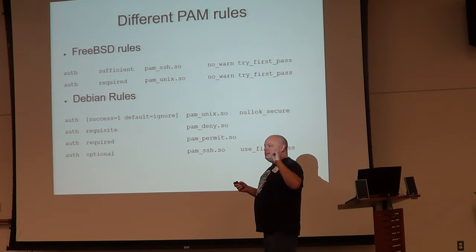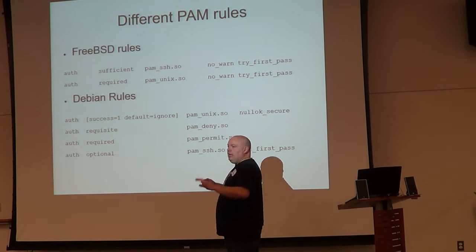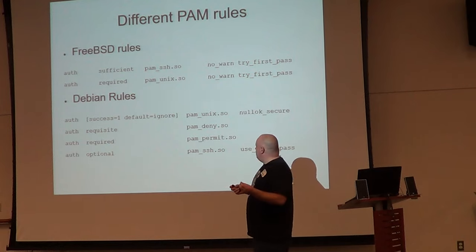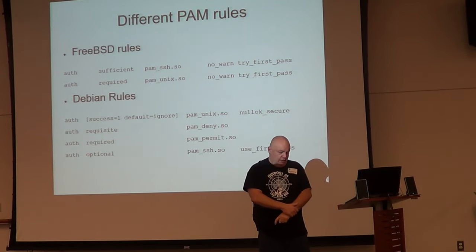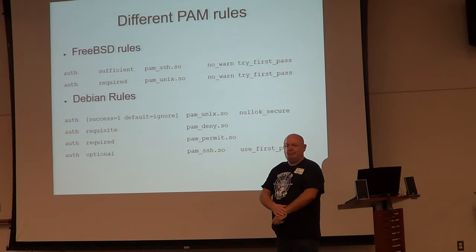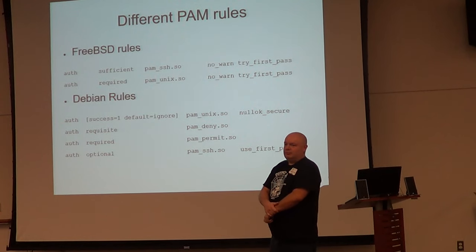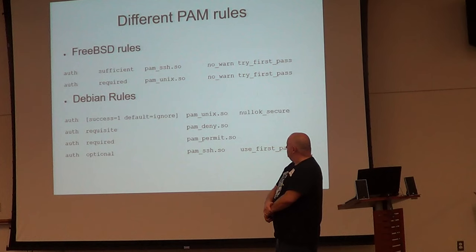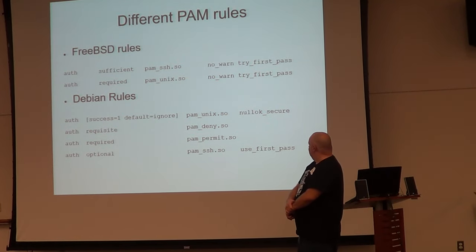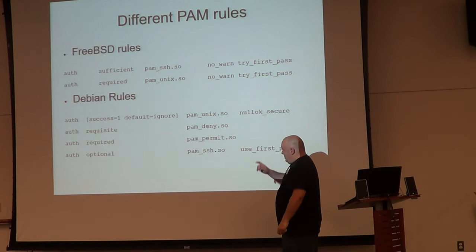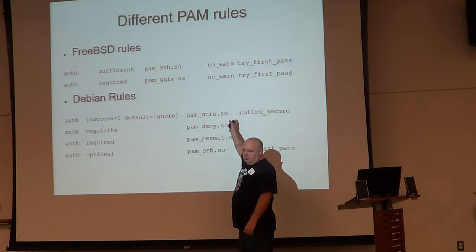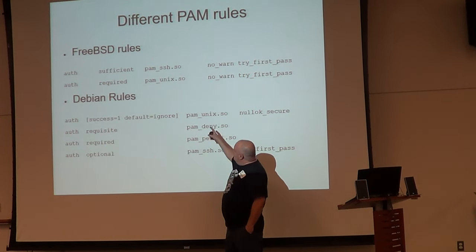Here's what Debian does with the same module — they have made some little changes, but the functionality is at its core the same. If you enter your Unix password, it goes to the required commit and then to the optional. If you type it incorrectly, it goes to requisite. In the Debian policy, we start off with Unix, not SSH.